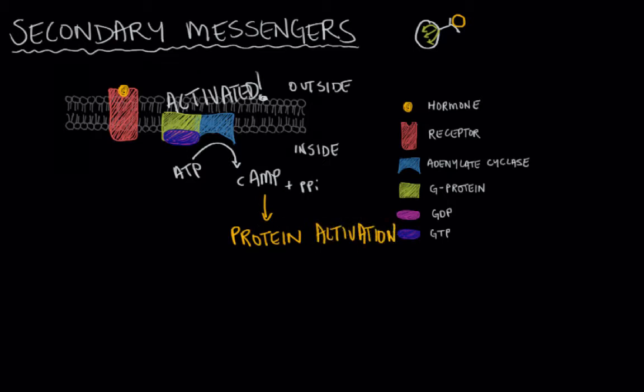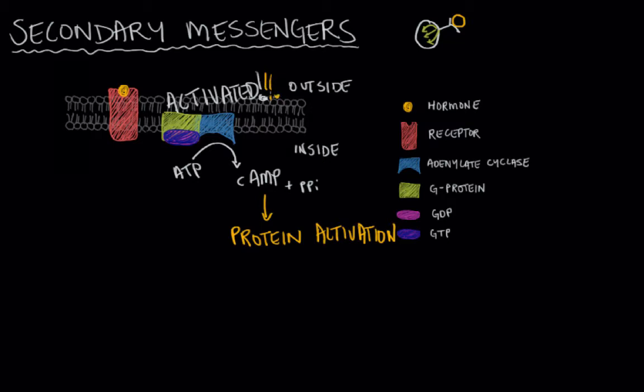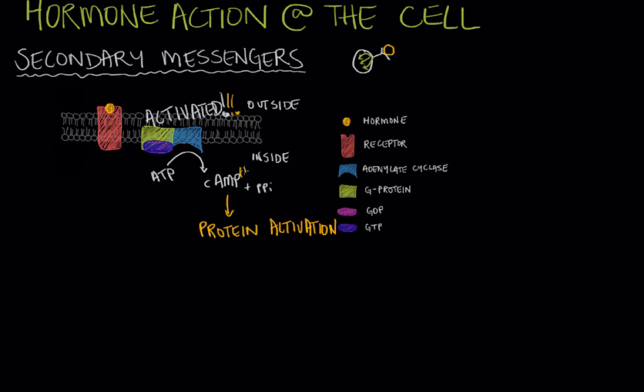Eventually the system resets, but not before several adenylate cyclase enzymes were activated, resulting in a lot of cAMP being produced.